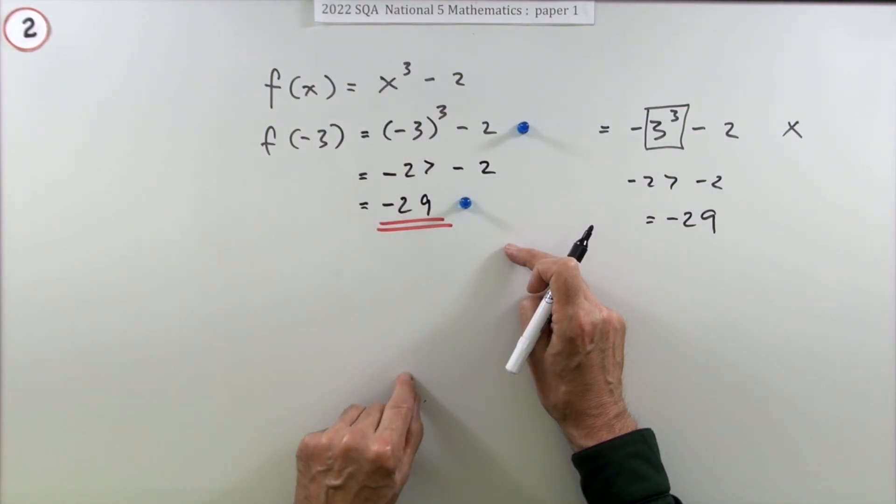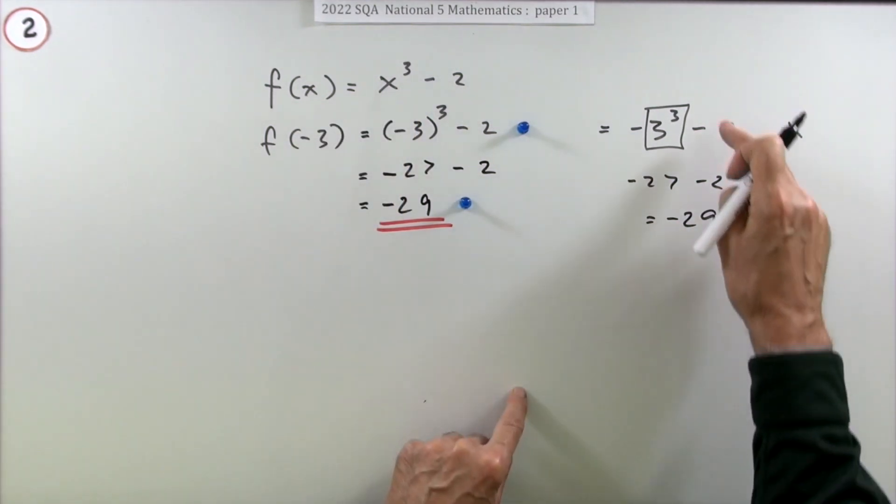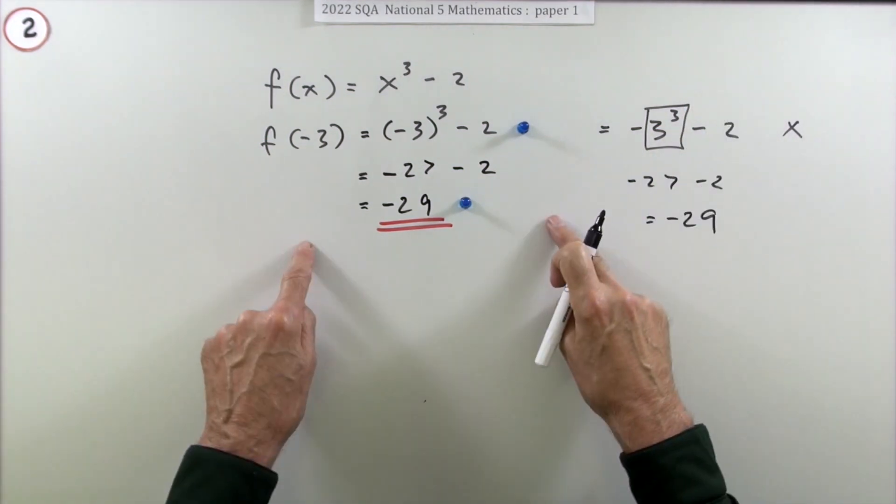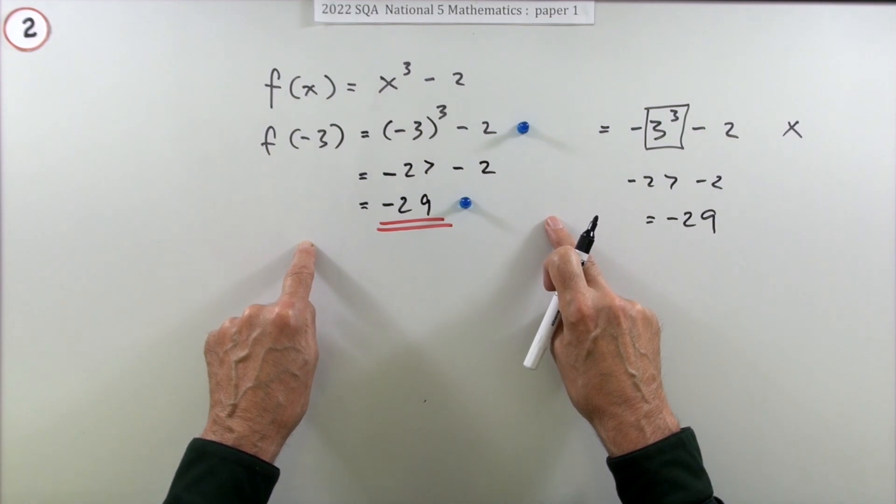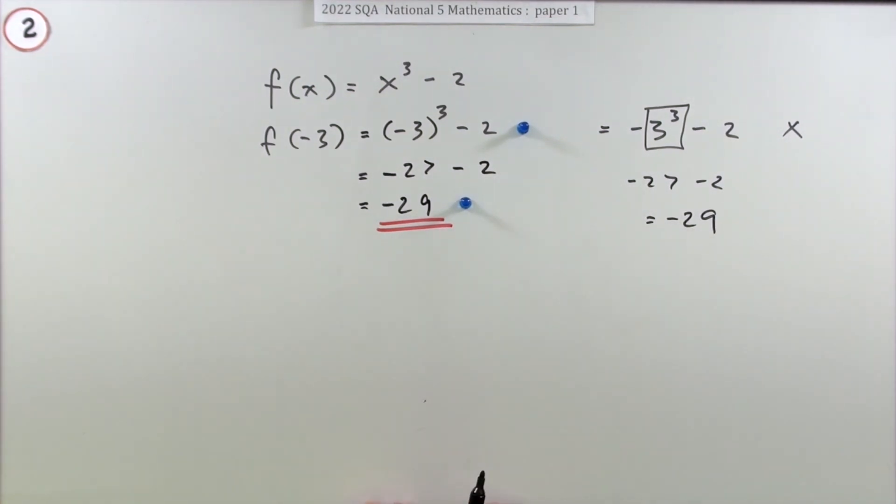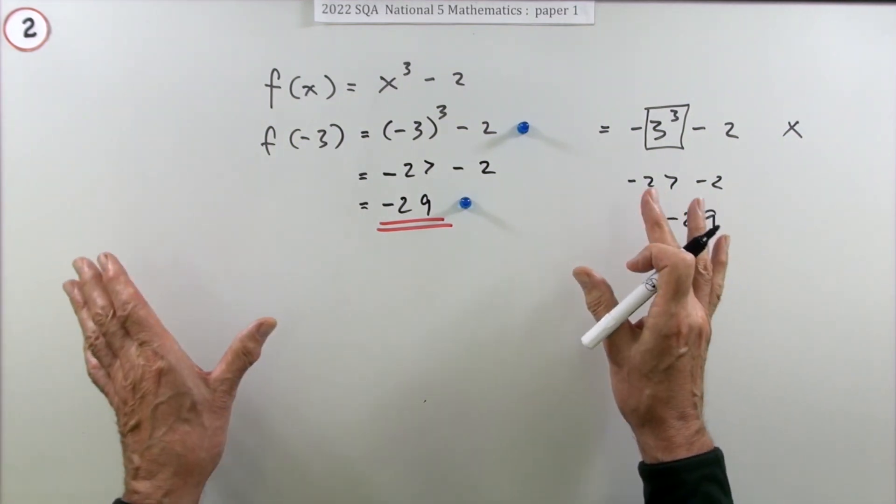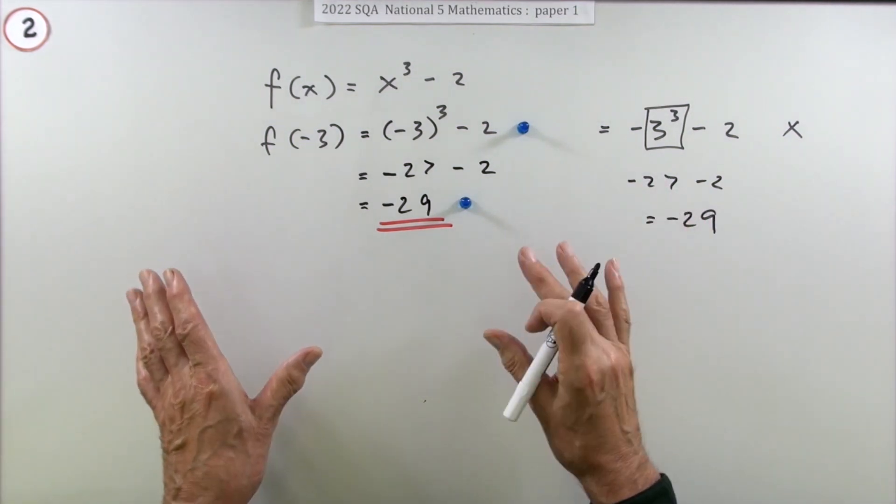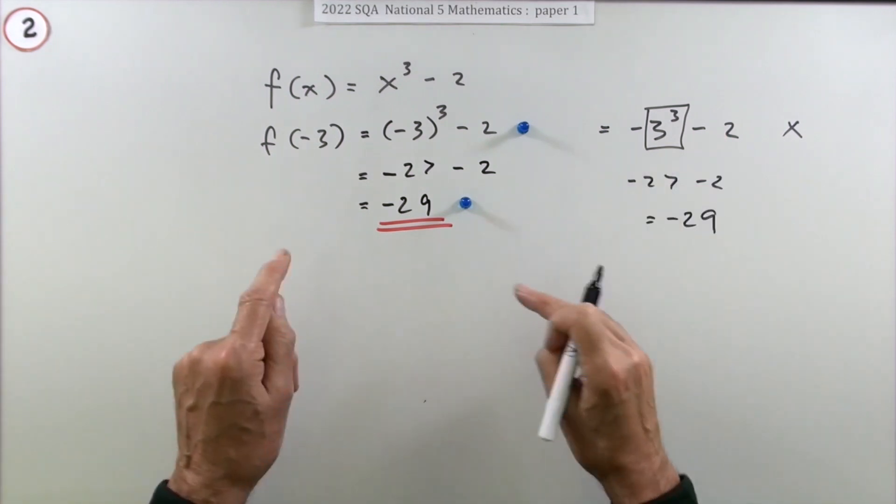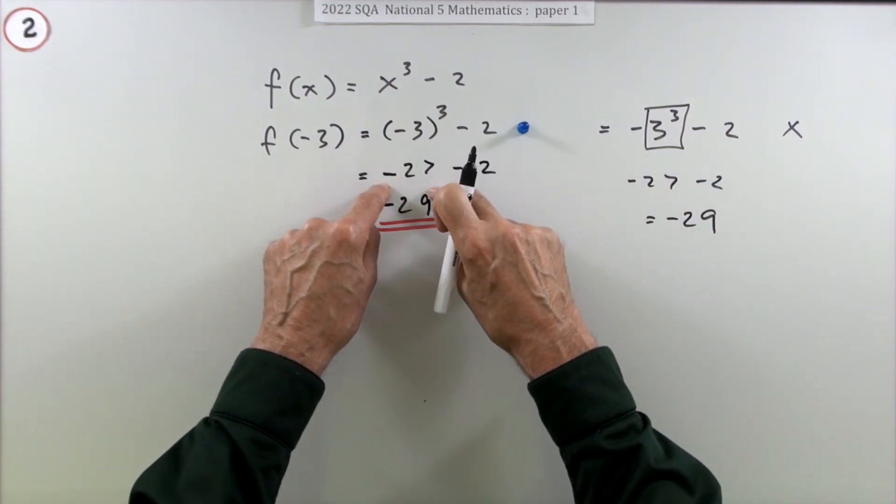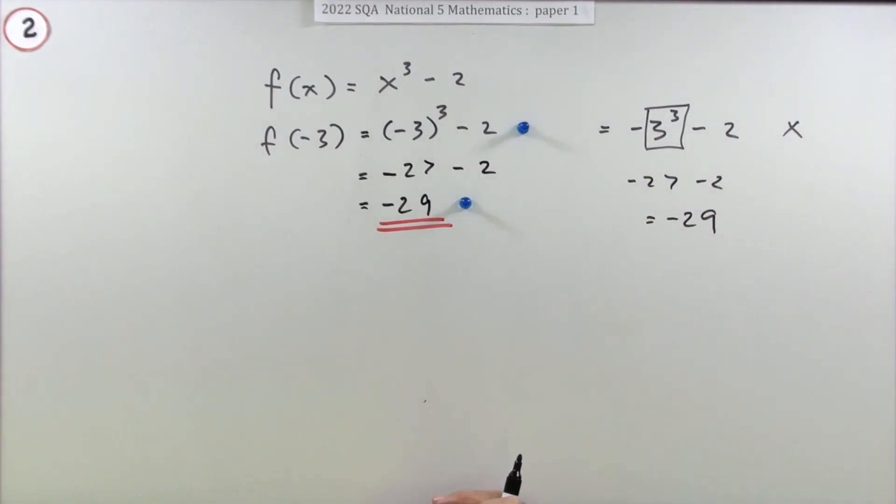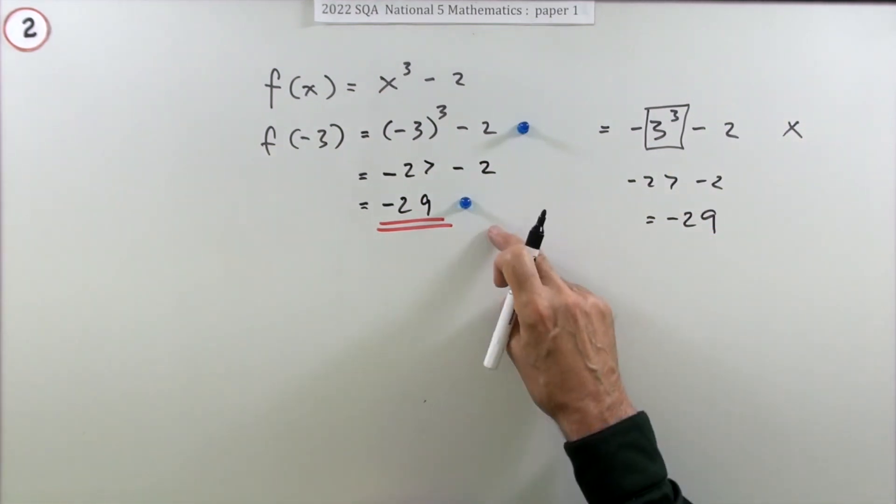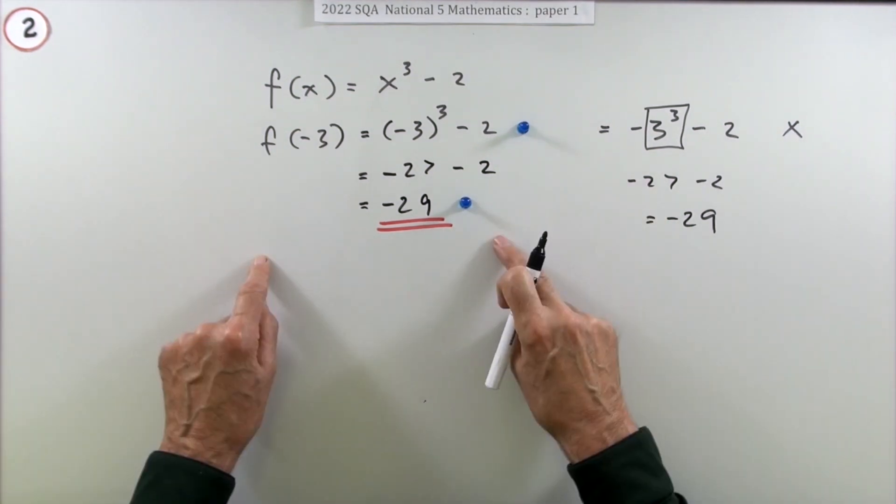Now normally in a marking scheme they would say, well they say it at the front here, don't they, normally they would say to earn full marks you must show your working, which seems to imply unless you show your working you won't get the full marks. You'd think that would apply here. You'd think you'd have to show the negative three in a bracket cubed in order to get the negative 29, because you could get the correct answer by making a mistake. However, in this question it says correct answer without working, award two out of two. Now that shouldn't be the case. That should only be the case if there was no way you could get to the correct answer through a series of errors. But that is the case here, so I don't understand that marking. You should put down the working anyway.